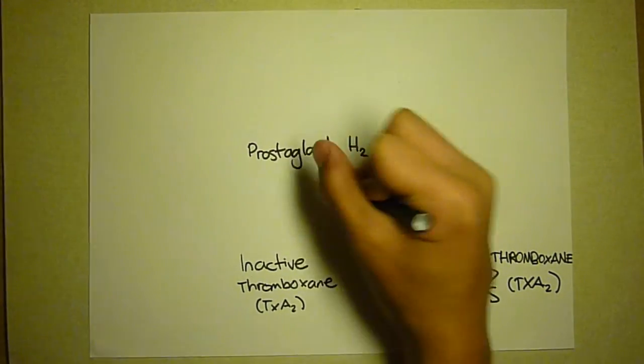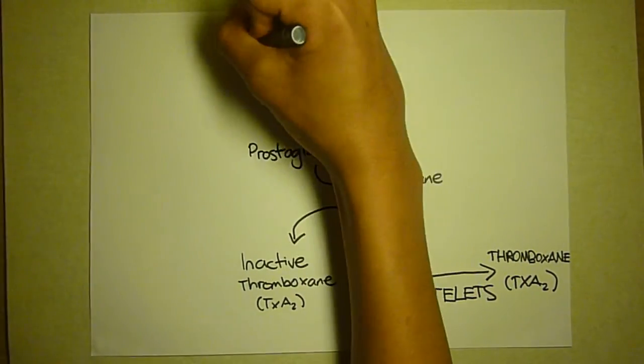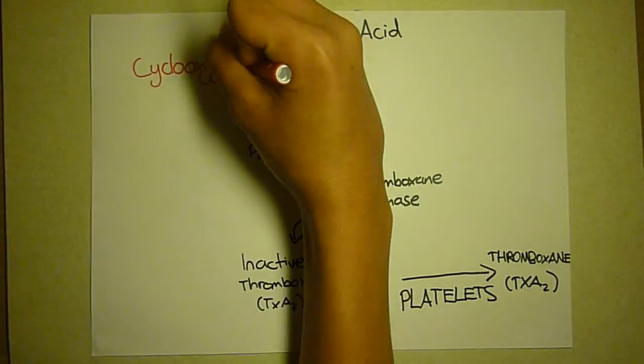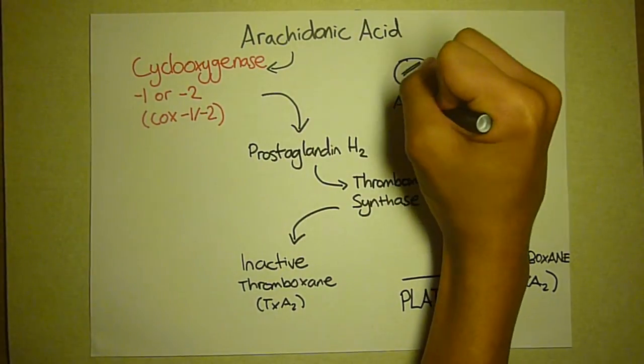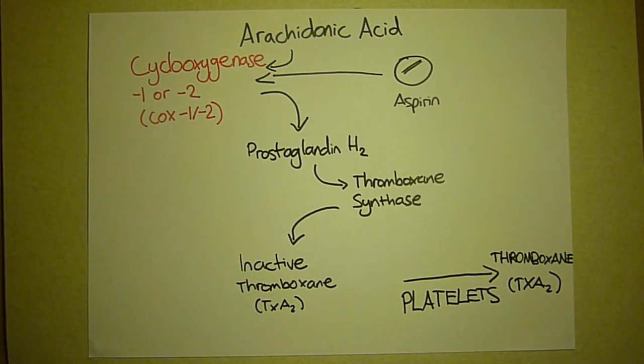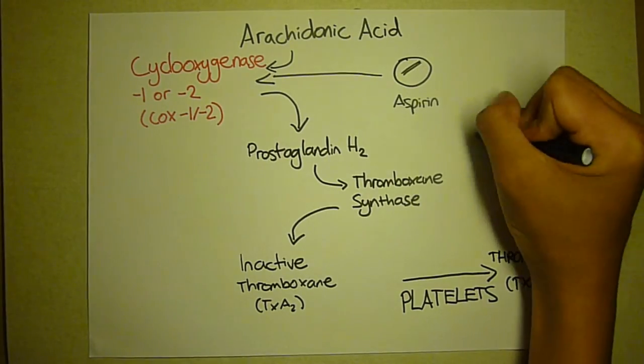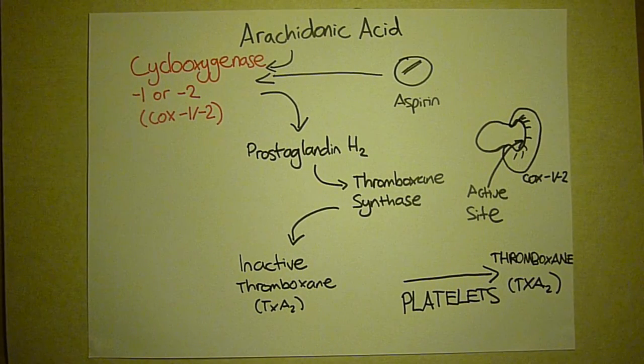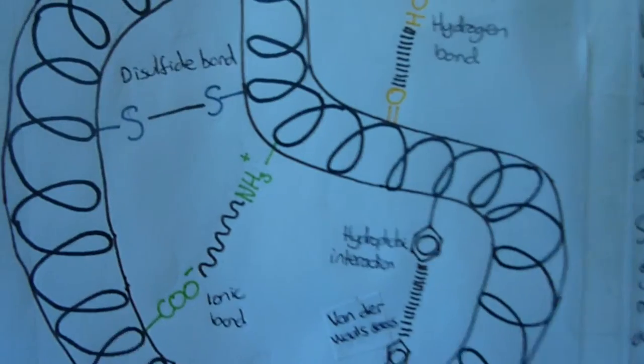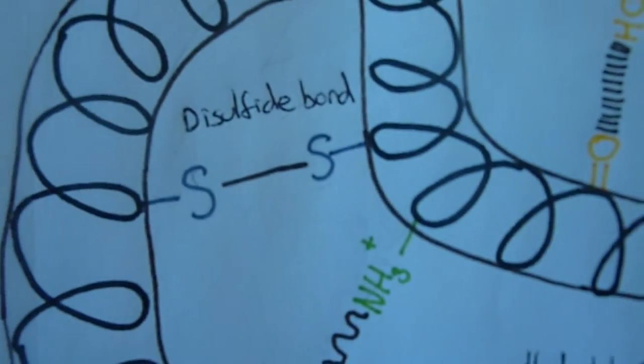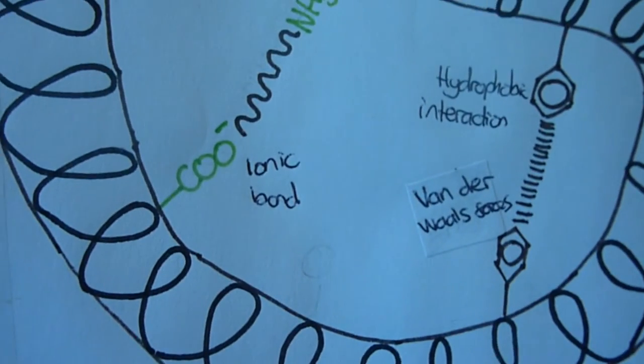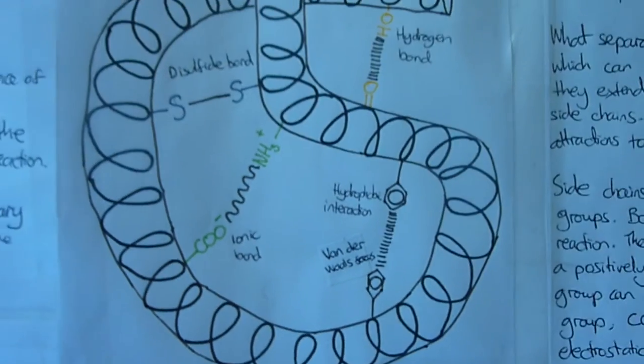Thus, less thromboxane can be produced, and so fewer platelets clump together. Aspirin is most recommended of the NSAIDs because the anti-platelet effect lasts for several days. This is because, unlike the other NSAIDs, aspirin irreversibly inhibits the enzyme by chemically altering the intermolecular bonds, such as disulfide bridges and ionic bonds, which make up the unique active site shape.